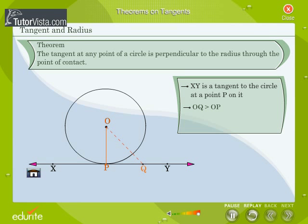This is true for all positions of Q on the line XY. So, OP is the shortest distance from O to XY. So, OP is perpendicular to XY.